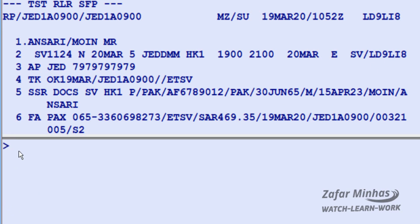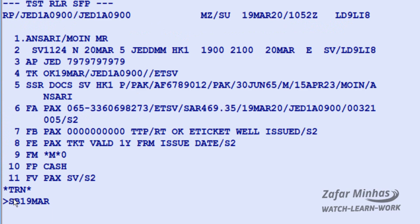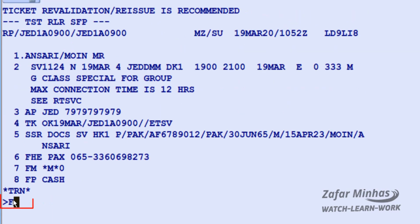To display the e-ticket record, use the TWD transaction slash L line indicator plus 6, FA line number from PNR. The coupon status is A — airport control. Some airlines may not allow reissue or revalidation if the coupon status is not O open. Update the itinerary with the required date of travel.